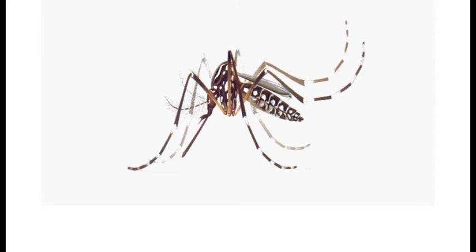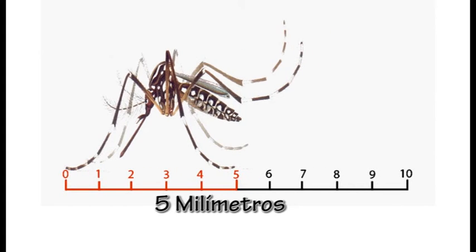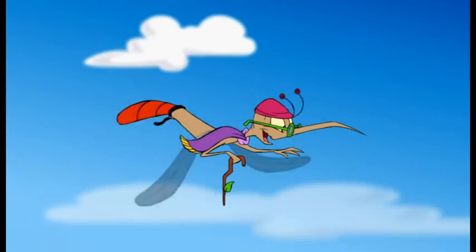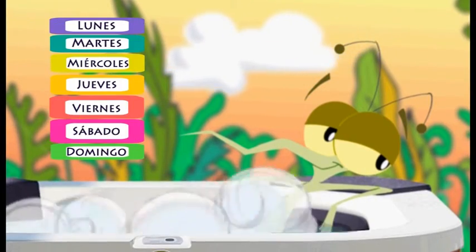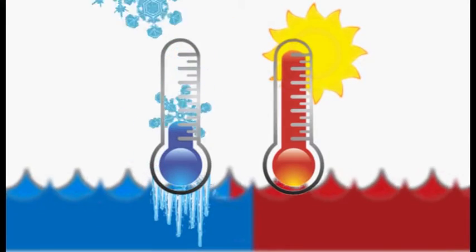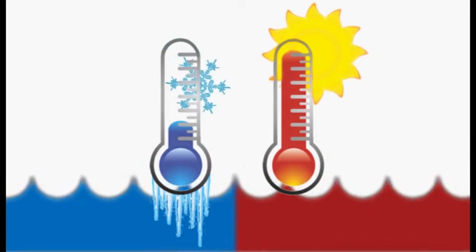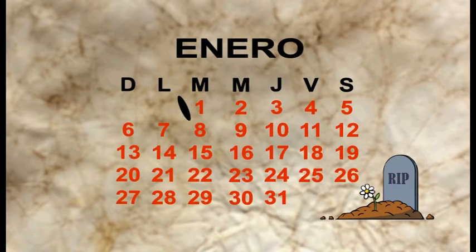Este chiquitín de apenas 5 milímetros, o sea medio centímetro, pasa al principio de su vida en el agua y después de grande en el aire. La vida acuática tiene un promedio de 7 días y es variable según la temperatura del lugar. La vida aérea es la etapa adulta y vive más o menos 30 días.